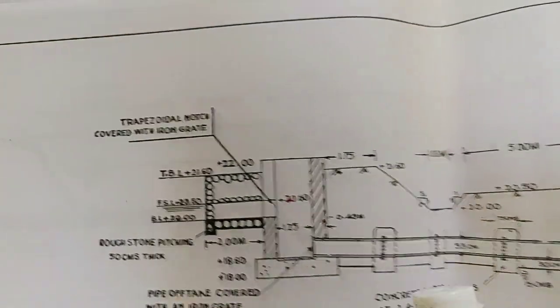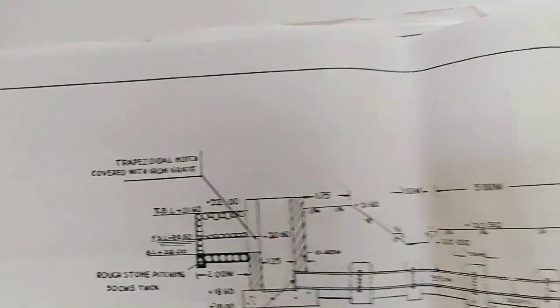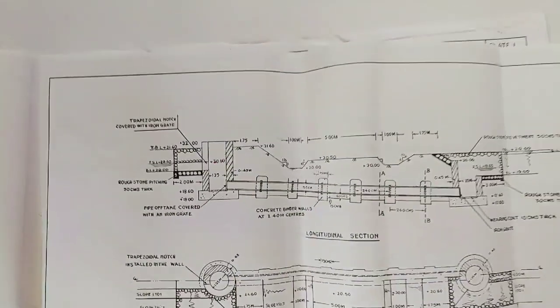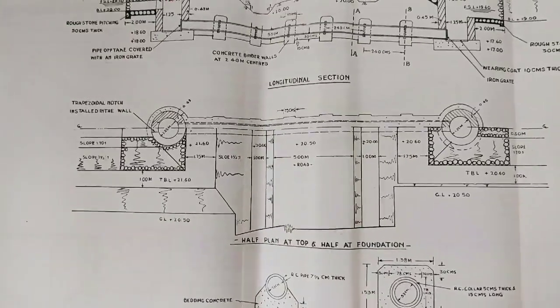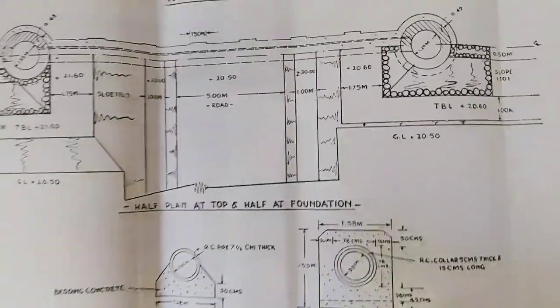We are going to calculate all the dimensions in the longitudinal section. Next is Half-Plan at Top and Half-Plan at Foundation. That is the central line.